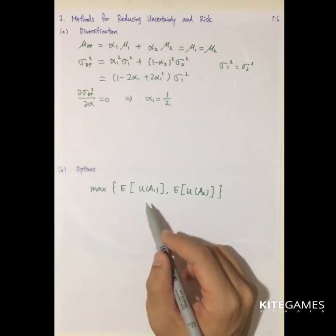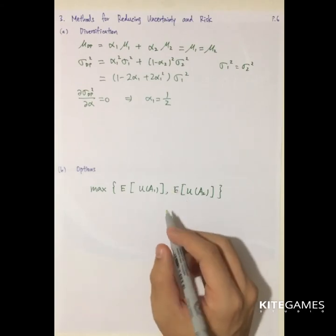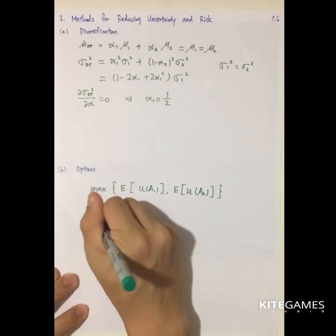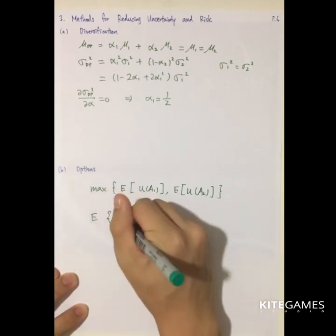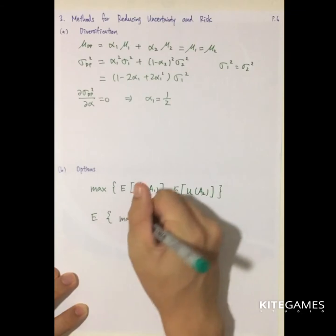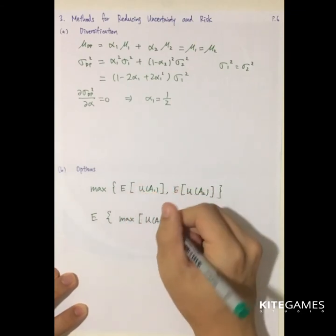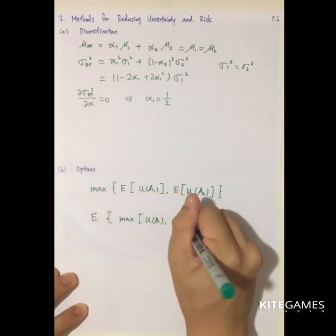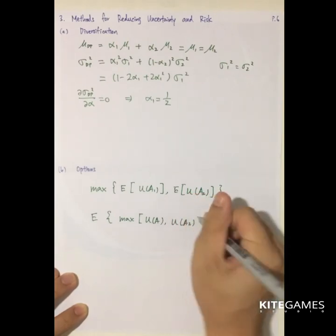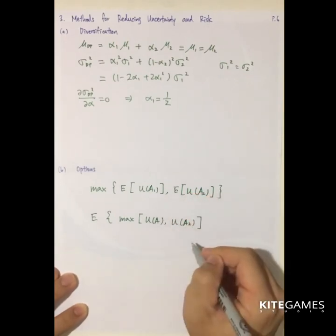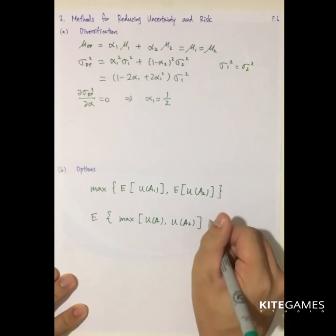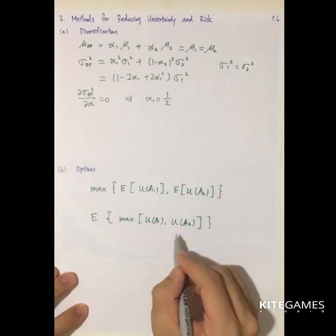So if you don't buy option, this is the result. And if you buy the option, so if the stock is performing well, you can buy the share at the strike price. And if the stock is performing poorly in A2, you can just ignore it, you just don't exercise your option.